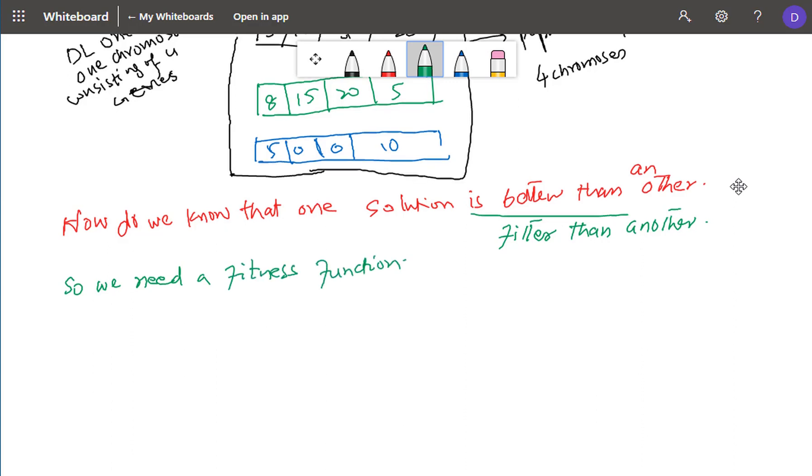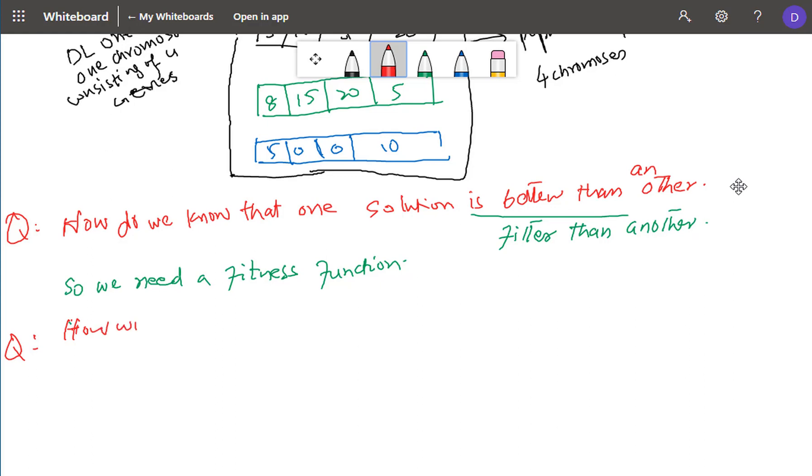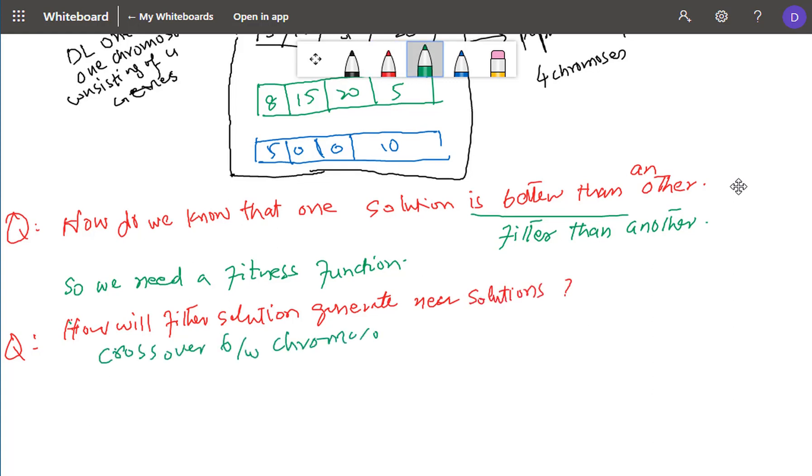Another important question is how will fitter solutions generate new solutions? Therefore, we use crossover between chromosomes and we will also discuss that. Related to this is the crossover rate which is also important.